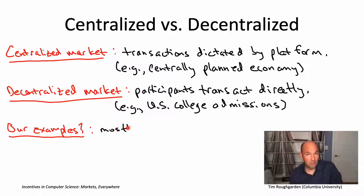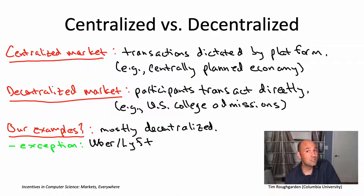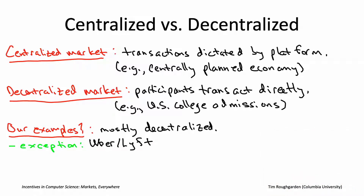Similarly for most of the other examples, but one actually big and interesting exception is the ride-sharing platforms. Uber and Lyft, if you think about it, are centralized markets. Both Uber and Lyft manage a market with drivers on one side and riders on the other side, but every single match of a rider with a driver is centrally dictated by the platform.